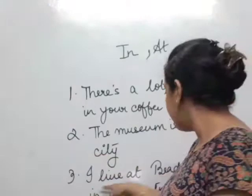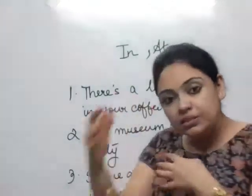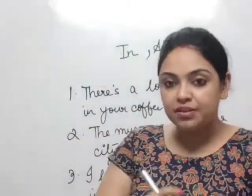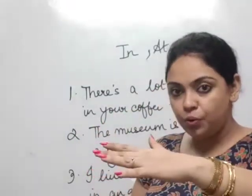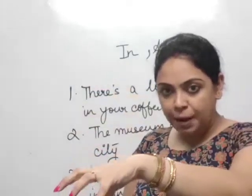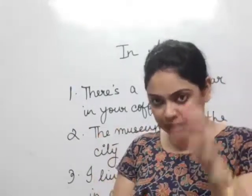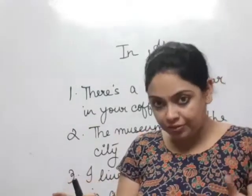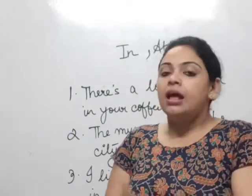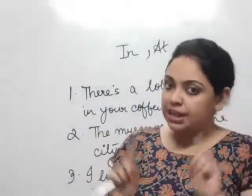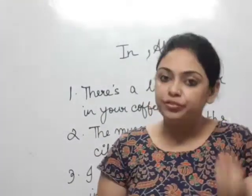I live at Bidden Street in an apartment. You can add: on the fourth floor. "On" shows the surface — the floor is the flat surface, so on the fourth floor or on the first floor. "At Bidden Street" is your exact location on the map. "In an apartment" means within the enclosure, the four walls of the apartment. And "on" tells you which floor — on the fifth or fourth floor.